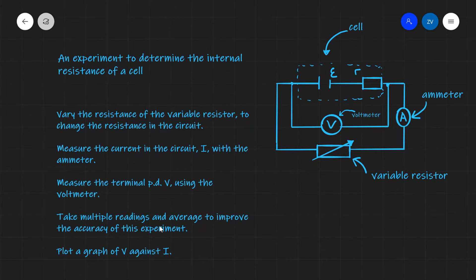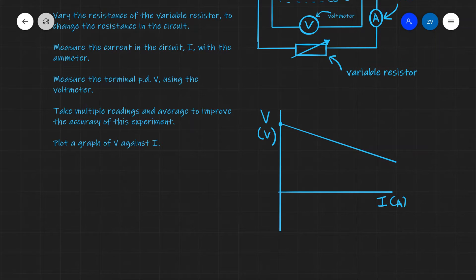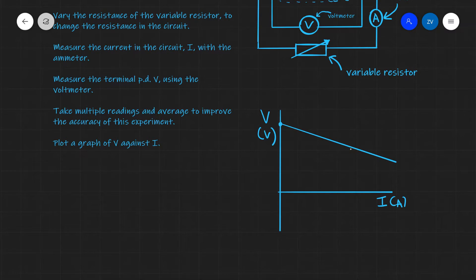Then we're going to plot a graph of V against I — that's the terminal PD against the current in the circuit. After plotting our graph, we're going to get a shape similar to the one drawn here: a straight line with a negative gradient.